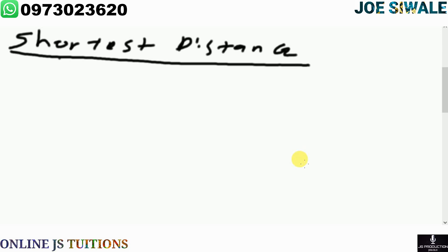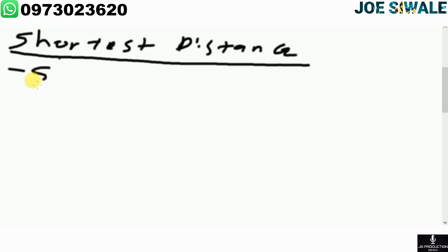Under trigonometry, we are going to look at shortest distance. You can calculate the shortest distance of a non-right angled triangle when you know the side and when you know the area of that non-right angled triangle. You are supposed to know the side and also the area.